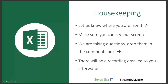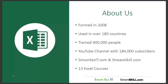Just very quickly, some bits of information about Simon Says IT. We were formed in 2008 and we're currently used in over 180 countries. We've trained 400,000 people to date. We have a really good YouTube channel with 184,000 subscribers and over 1,000 videos. We run two brands - simonsaysit.com and streamskill.com, where you can access all of our training courses for a low monthly fee. We love Microsoft Excel - we have 13 courses on it and started training it in 2007. Debs is currently recording the Advanced Excel 2019 course, due out end of February, early March.